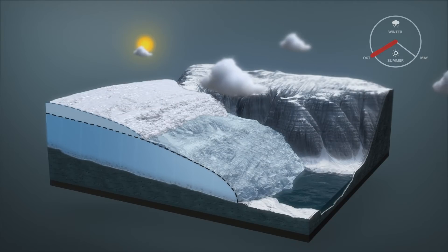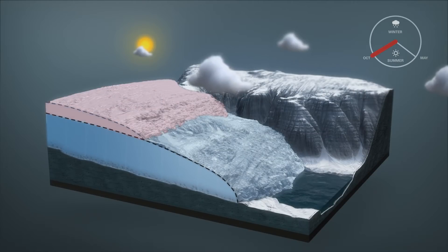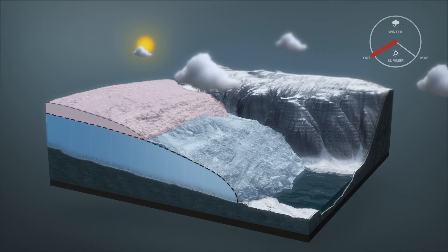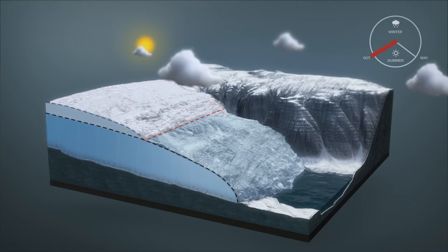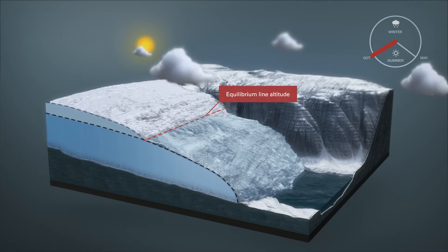As autumn sets in, snow left over from the previous autumn and winter and glacial ice meet on the surface of a glacier at a given altitude. This imaginary altitude line is called the equilibrium line.